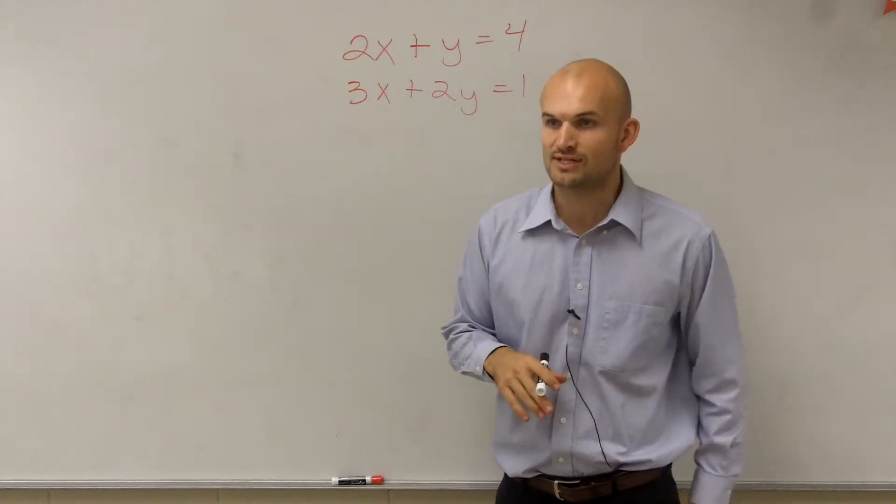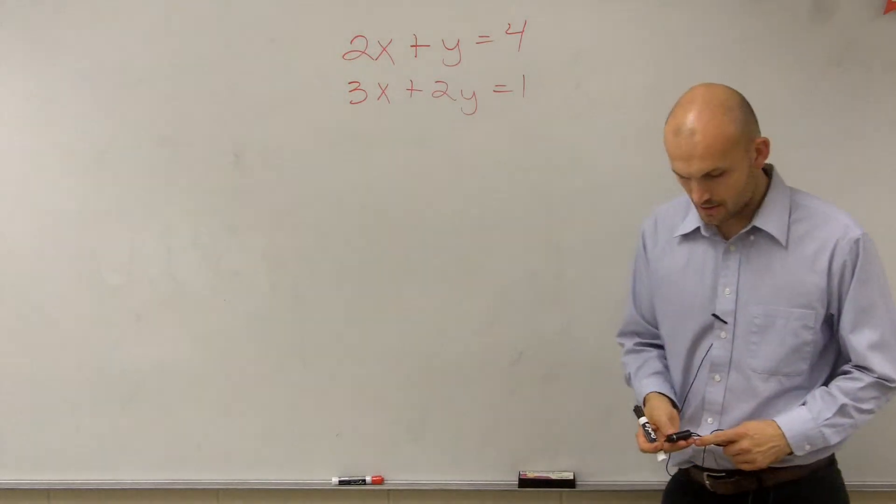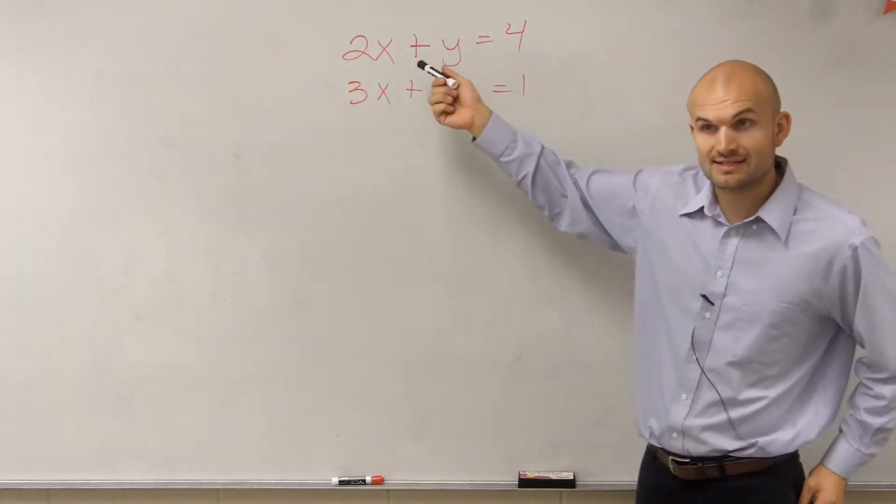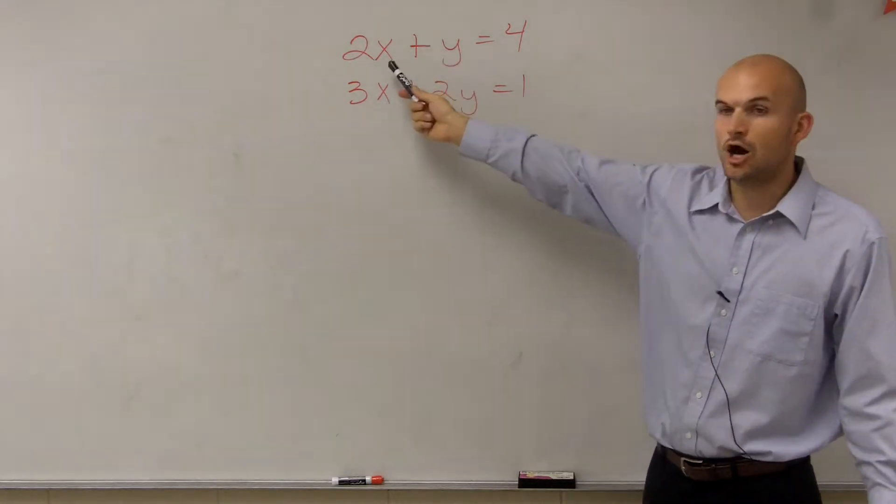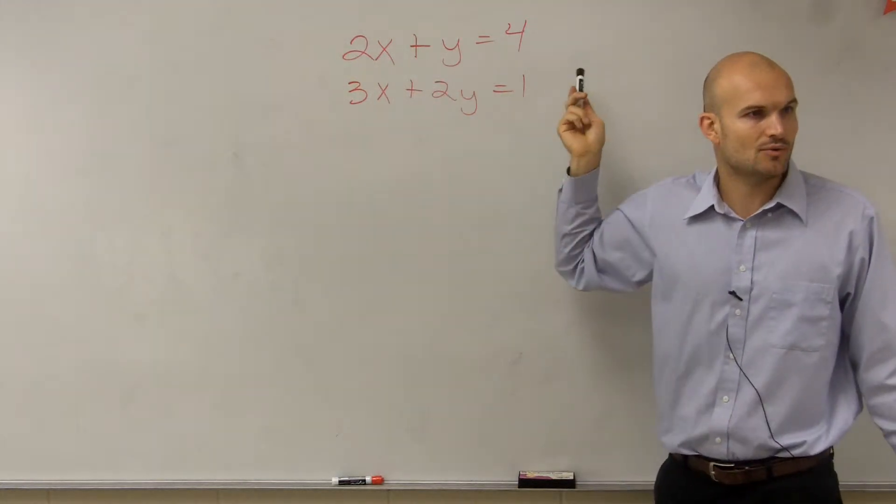So we need to think about which variable is going to allow us to do the least amount of operations. You would say the easiest one to solve for would be the y in the top one. Now, why is that one easier than the y in the bottom?